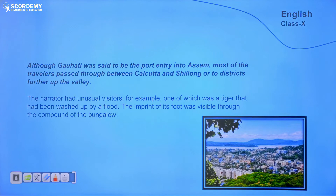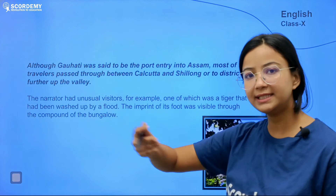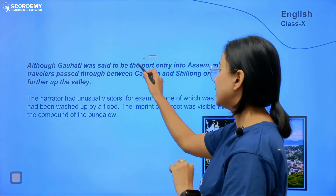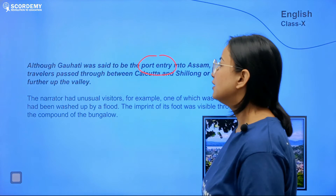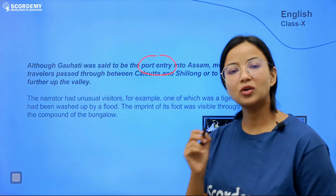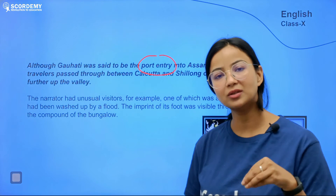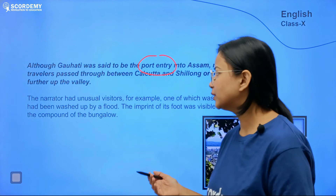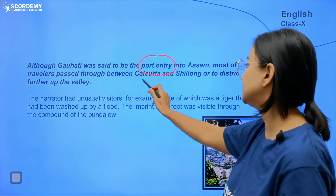Guwahati was said to be the port of entry into Assam — the gateway. It is the gateway not just of Assam but of northeast India as well. Most travelers passed through Guwahati between Calcutta and Shillong and further districts. Even today in 2021, Guwahati is still very relevant as the gateway of the entire northeast India.